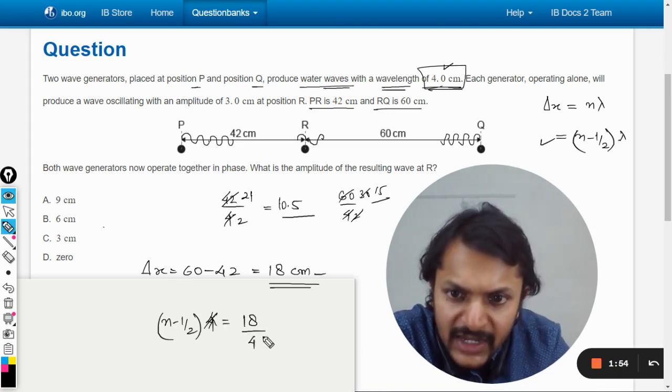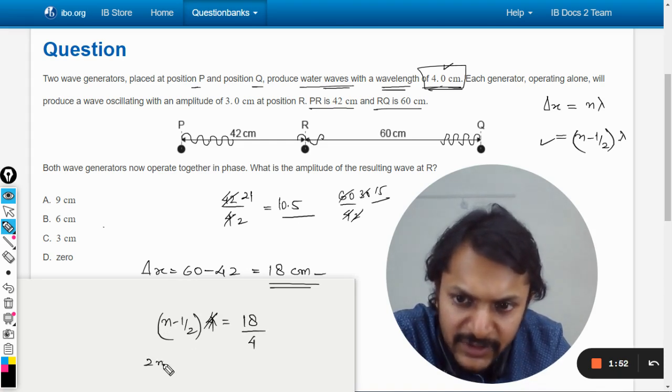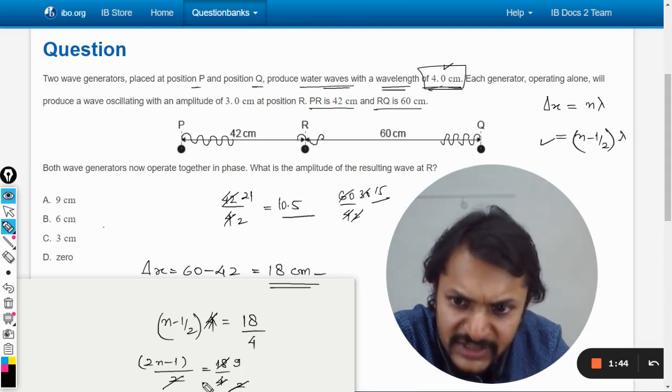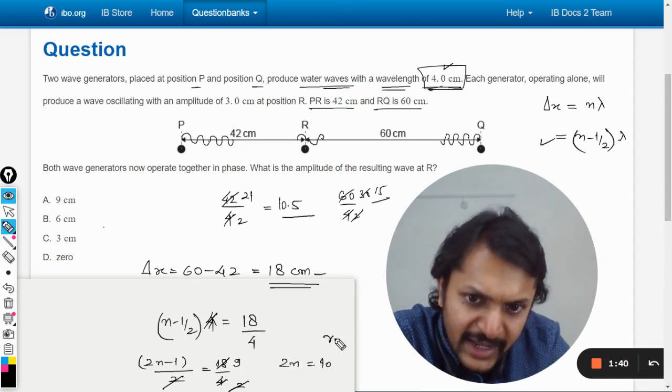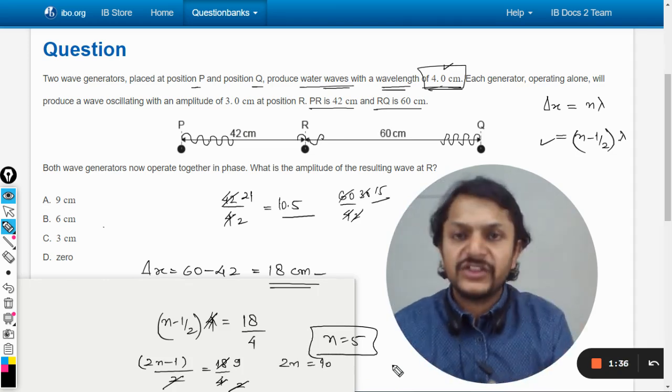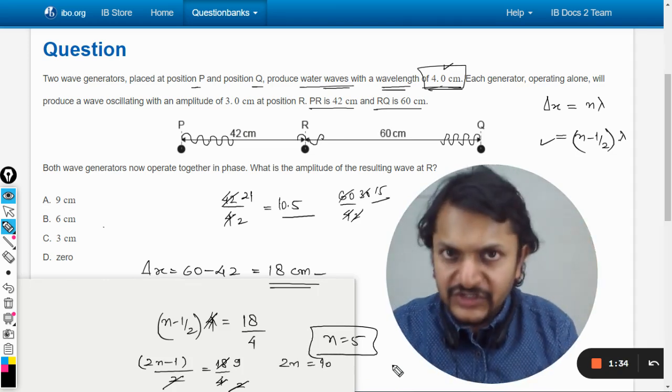This is 4, so this becomes (2n - 1)/2 equals 18/4. Simplifying: 2n - 1 equals 9, so 2n equals 10 and n equals 5. We are literally talking about the fifth dark fringe.